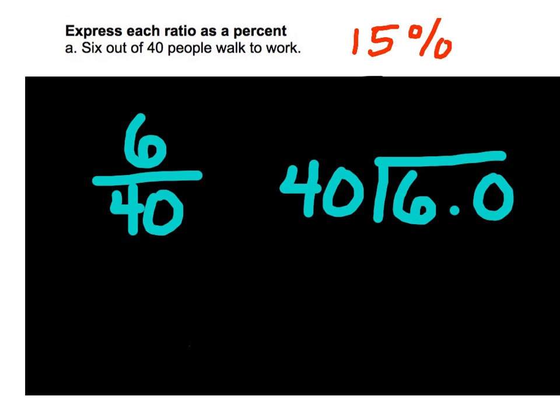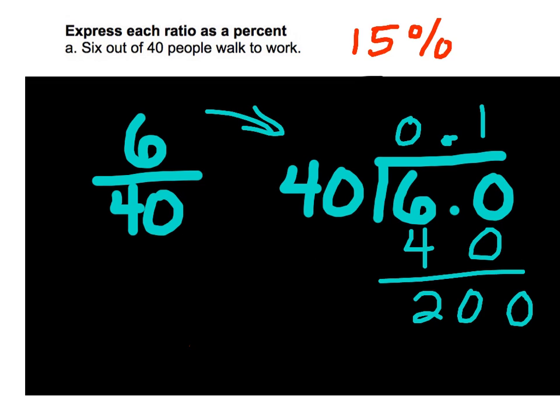But once you have it set up this way for this particular style, it's the same process. 40 goes into 6 zero times. You need a decimal point. 40 goes into 60 one time. 20 left over. Drop down a zero. And then it goes in five times. So from here, you'll actually need to convert your decimal point into a percent. Not terribly difficult. If it's a method you prefer, then go for it. If it's something that doesn't really appeal to you, then I would stick with the percent proportion.